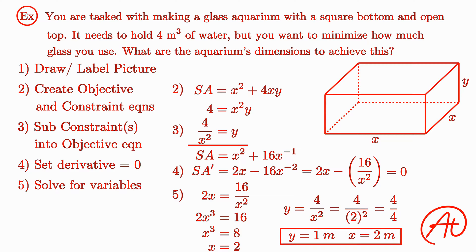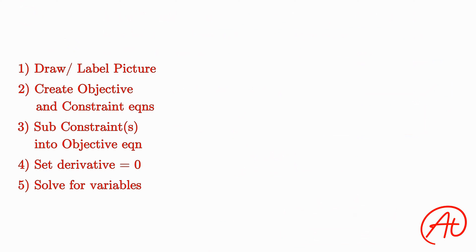To solve any optimization problem in Calc 1, remember to follow these 5 steps. First, always draw and label a picture of the scenario to help visualize everything. Next, find your objective and constraint equations. Then use the constraint equation to reduce the objective function to an equation of only one variable. Then you can take the derivative, set equal to zero, and finally solve for all of your variables.